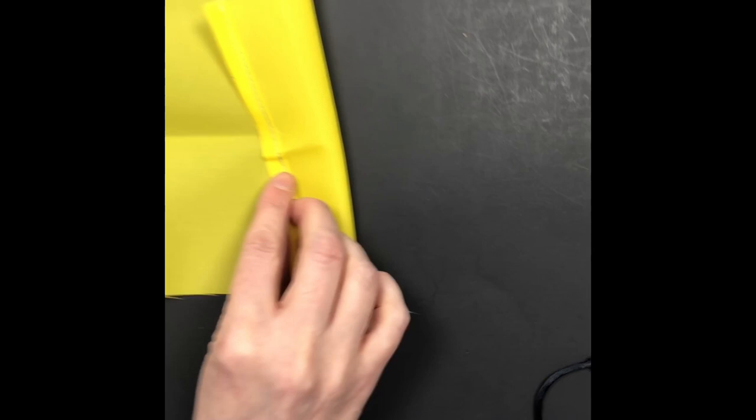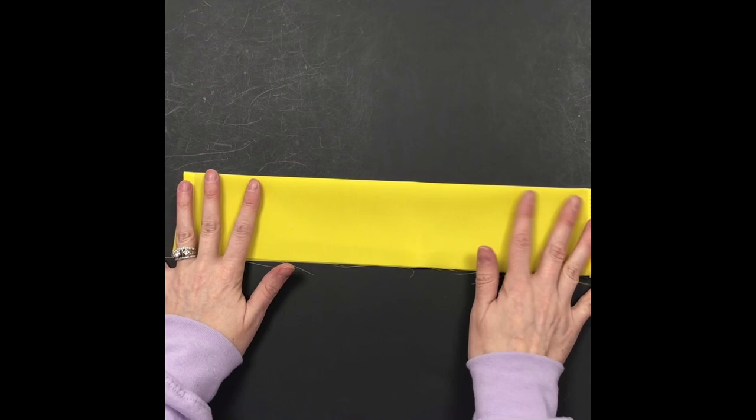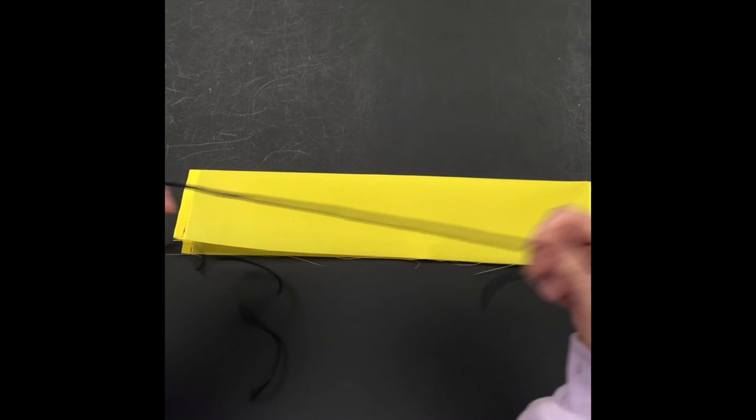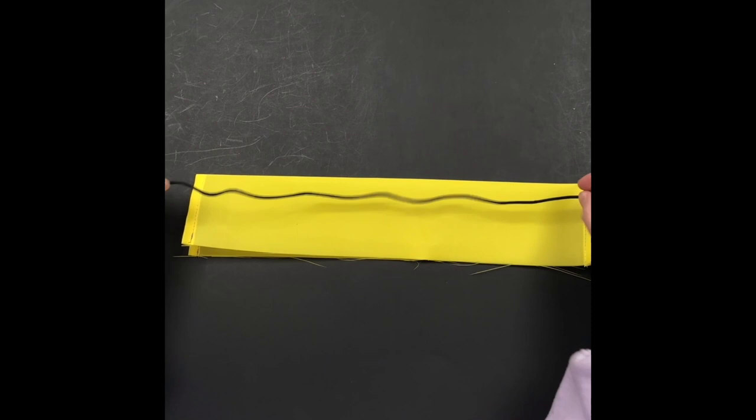I just sewed both sides. So this is the wrong side. This is where the folded in portion was and this is the right side. So now I'm going to fold it hot dog style so that the wrong side is together. And you're going to grab your ribbon, cording, whatever you want.